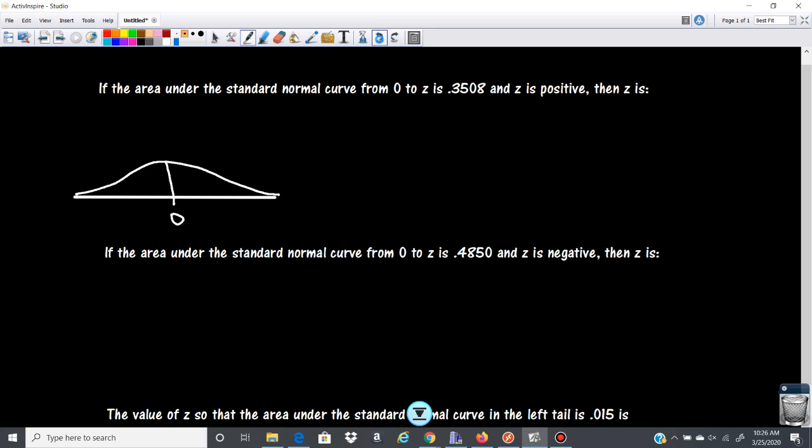So let's go back to our curve and I have the area under a standard normal curve from zero to z. So let's see, here's zero, zero's in the middle and z is 0.3508 and z is positive.